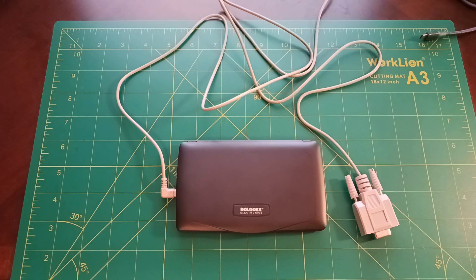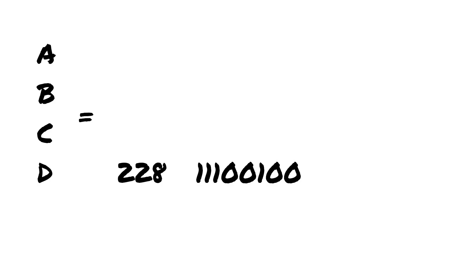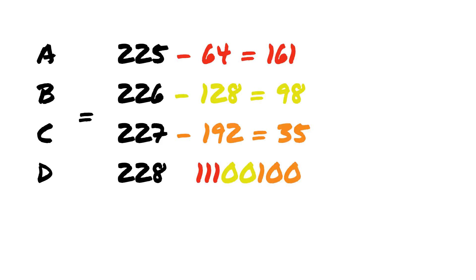I made a spreadsheet with some example input-output data, and after looking at the binary representations of the inputs, some patterns began to emerge. In a nutshell, subsets of the bits in the fourth number determined if each of the other three inputs had either 0, 64, 128, or 192 subtracted from them.